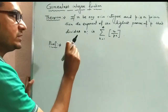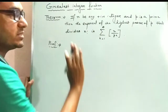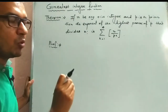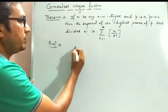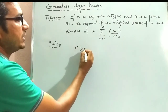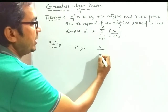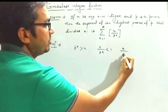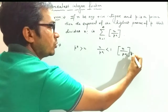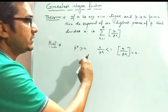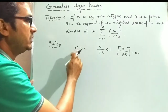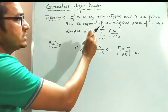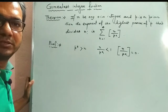Now we go to the proof. Note that this is written as an infinite sum, but really it is not infinite. Because when p^k > n, then n / p^k < 1, so ⌊n / p^k⌋ = 0. All later terms are also 0, so this is converted into a finite sum.